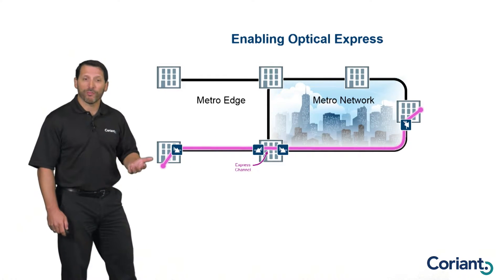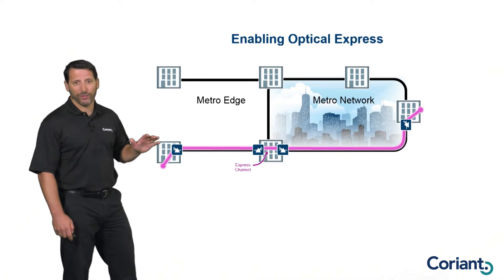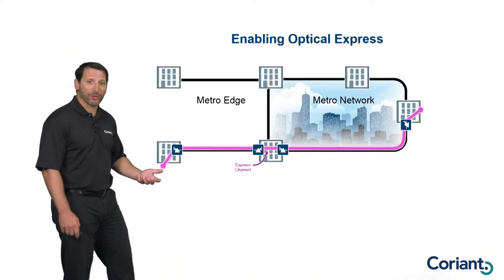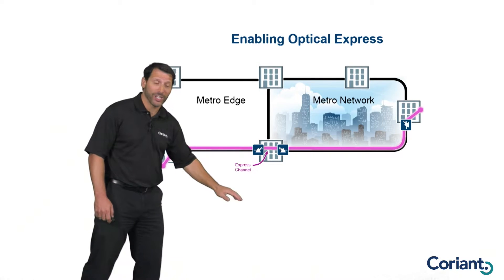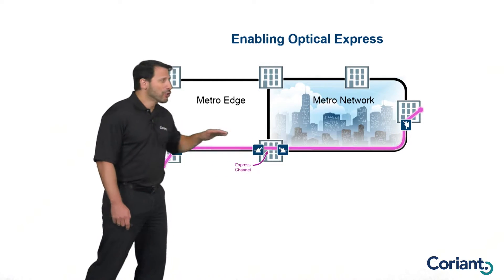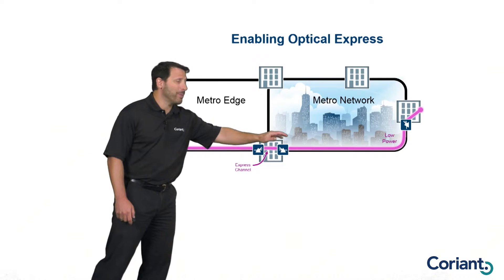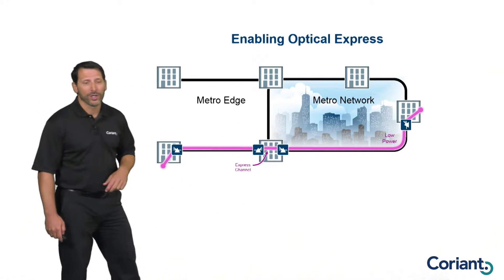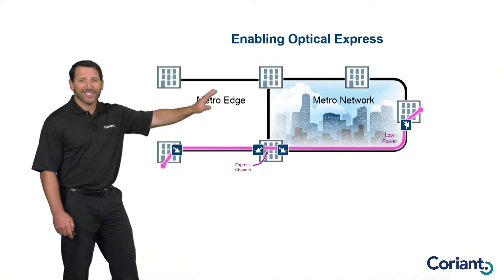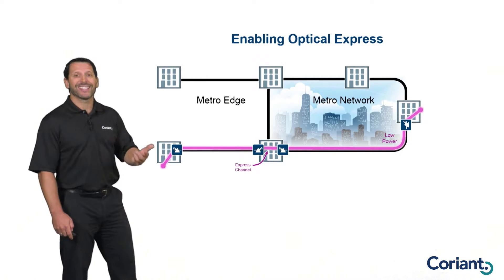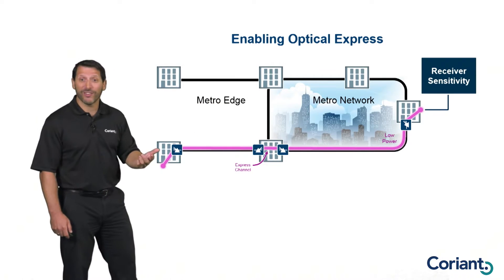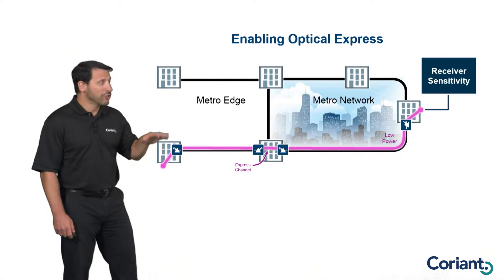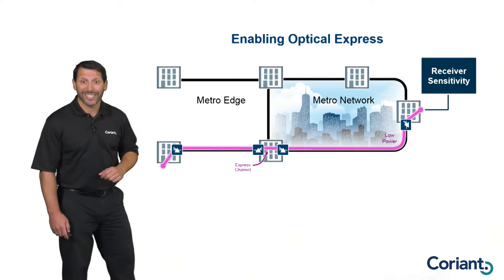One of the biggest challenges with building Optical Express-enabled networks is managing power levels. Signals are launched at a certain power level, and as they traverse the network they continue to lose power through every node and fiber span. If you go long enough distance, you'll arrive at your destination at a relatively low power level. The problem is that at the destination you have an optical receiver with a receiver sensitivity — it can only detect signals at a certain power level. So if the power level is too low, the receiver might not be able to detect it.